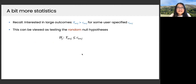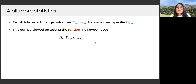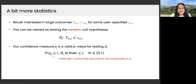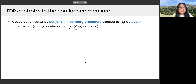From a statistical perspective, finding yₙ₊ⱼ larger than cₙ₊ⱼ can be viewed as testing the random null hypothesis Hⱼ: yₙ₊ⱼ ≤ cₙ₊ⱼ. Our confidence measure is very close to a p-value — it is a valid p-value if we account for the randomness of the hypothesis itself. For any fixed t in (0,1), we have valid type-one error control: the probability that pⱼ ≤ t under the null is at most t.